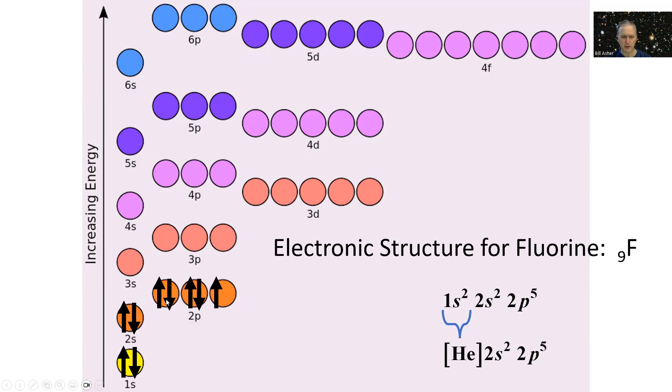Following Hund's rule, we now have to fill up the 2p orbitals and pair electrons for five total electrons in the 2p orbitals. So its electronic structure is 1s² 2s² 2p⁵, and then helium in brackets, 2s² 2p⁵. Fluorine would have seven valence electrons.